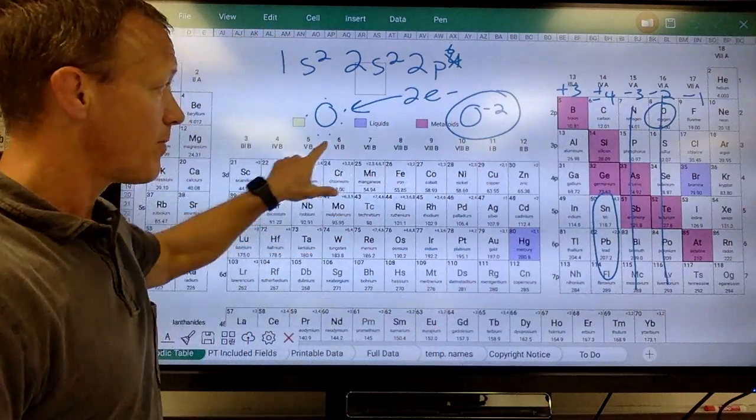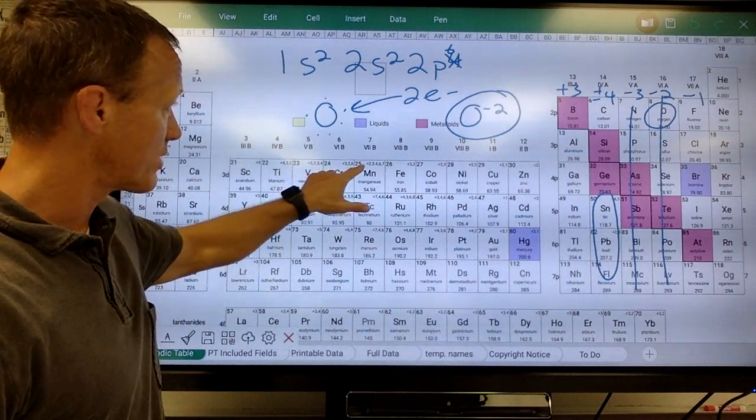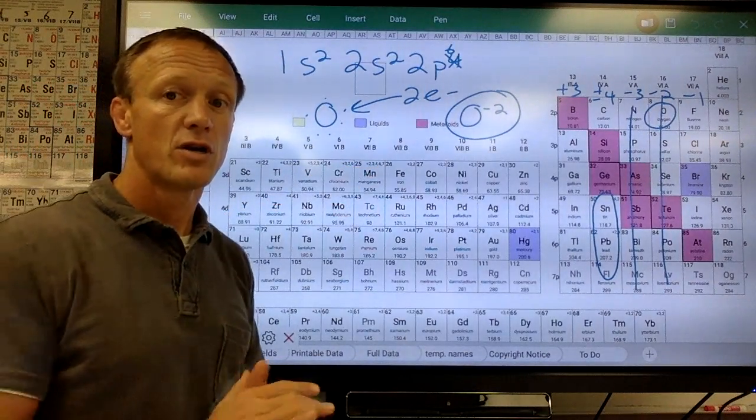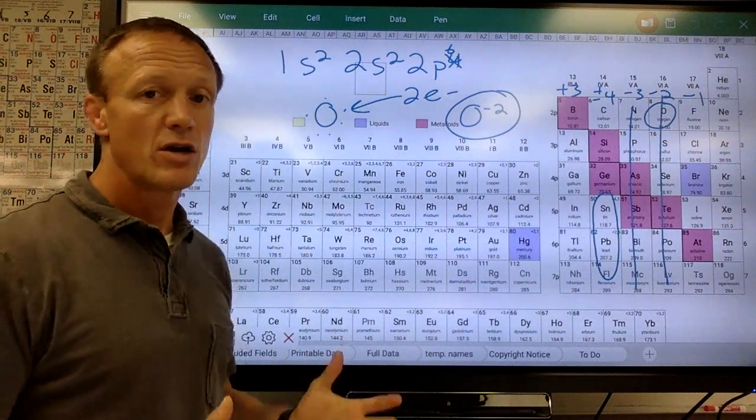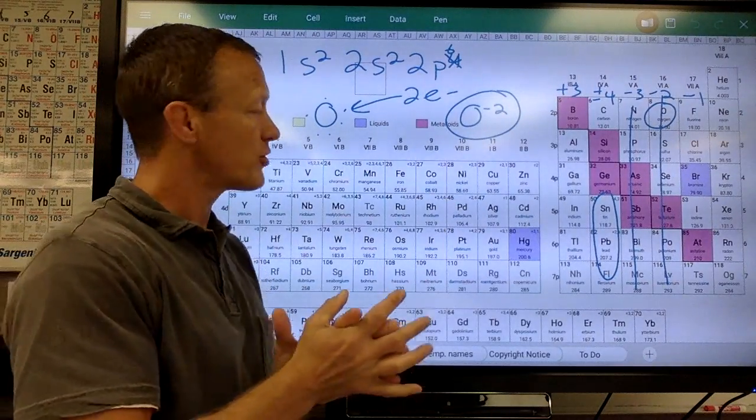These elements in the middle of the table form multiple charges. And you can see on here, like chromium can be a plus three, plus two, plus six. Manganese can be a plus two, plus three, plus four, plus six, plus seven. So those charges you'll never have to know. They just are listed in there. Most times, plus two is a really common charge for them, but they can be different charges as well.